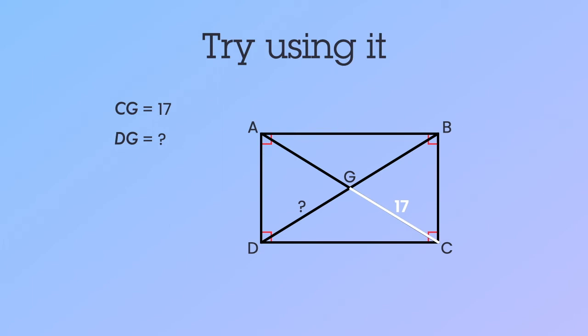We need to know how big DG is, and that's from a different corner to the center. Now you may already have an idea of how big DG is, but just to make sure we have valid geometric reasons for why DG is as big as you think it is.